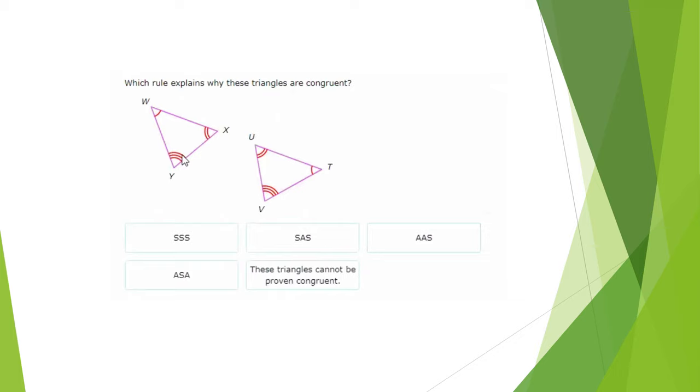In this case, the triangles cannot be proven congruent. AAA does not prove congruent. It can prove similar, doesn't prove congruent.